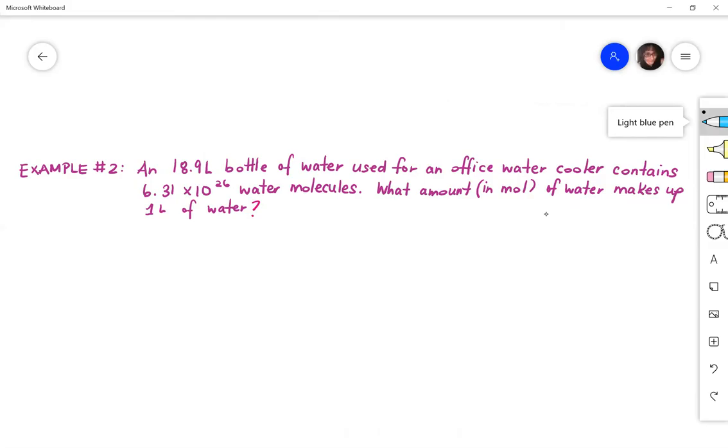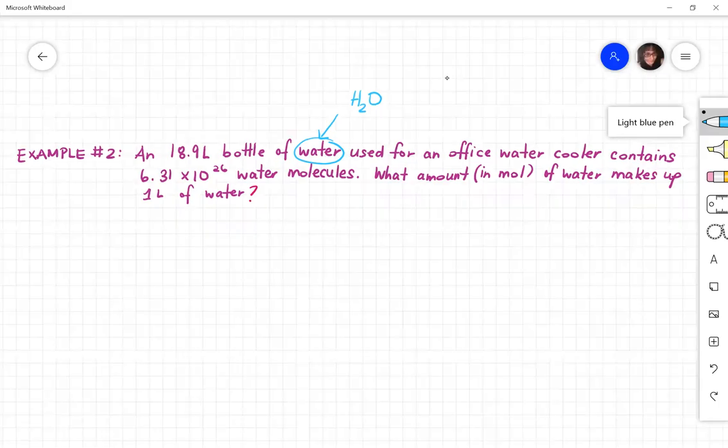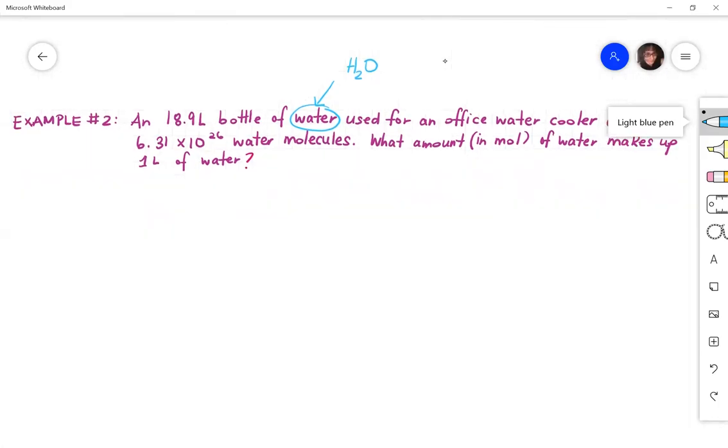So again, start with what's given. Think about what you need to find, so what's required, and set up your equation, right? Remember to write down everything that's needed. Remember water, what is your formula for water? H2O, right? And we're going to write down everything that we need in the question.